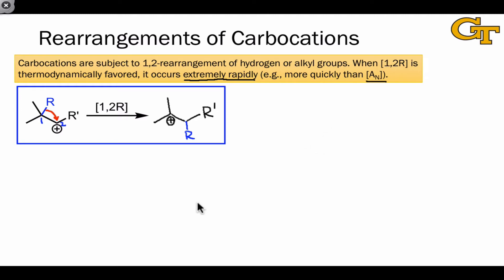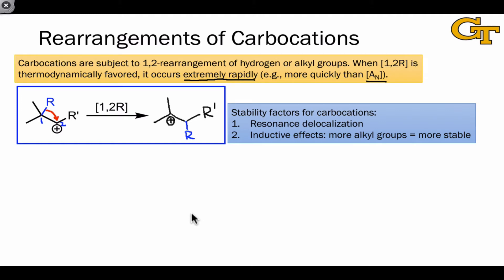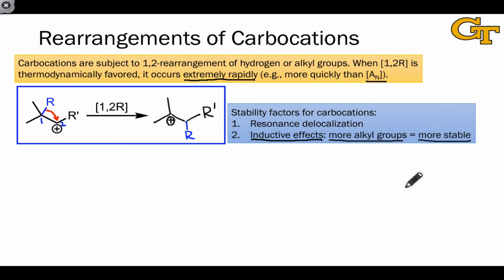Since we need to make this call about whether a particular 1,2R step is thermodynamically favorable or not, it helps to revisit the stability factors for carbocations. There are two that are relevant to this determination. The first we'll focus on is inductive effects associated with the number of alkyl groups connected to the cationic carbon — cations bearing more alkyl groups are more stable due to the inductively donating nature of those alkyl groups.